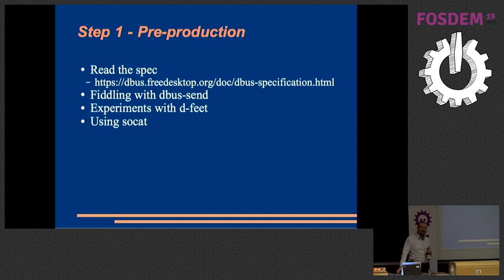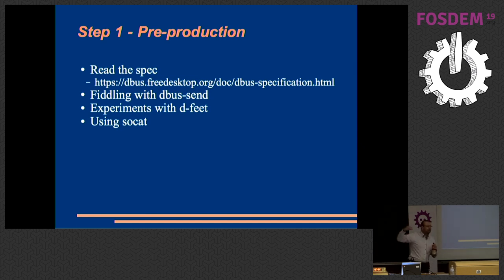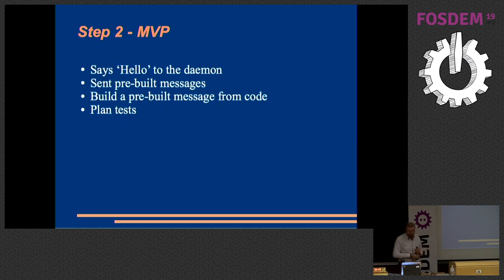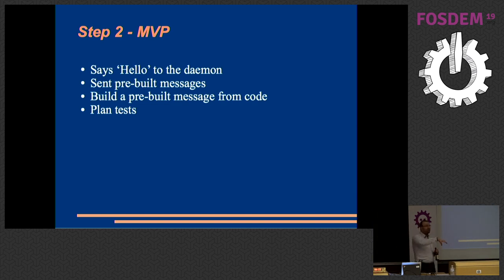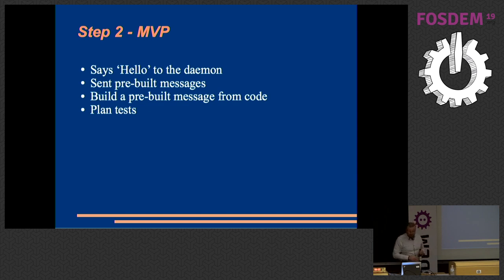Socat was an absolute godsend — I could look at all the data going through and verify whether I was interpreting the spec correctly. Then, first things first, I built an MVP that did nothing but say hello to the daemon. The very first thing you have to send to the D-Bus daemon is literally the word hello. If you don't say hello, it will close the socket and say bye-bye. So I wrote something that said hello to the daemon, sent the messages I'd grabbed from socat as big binary blobs, and it worked.